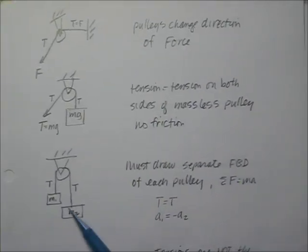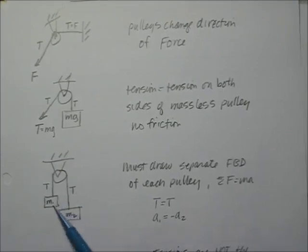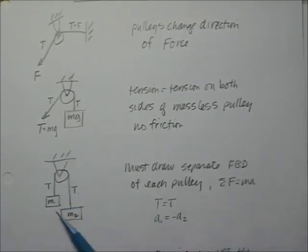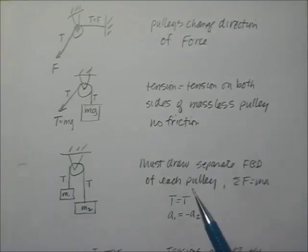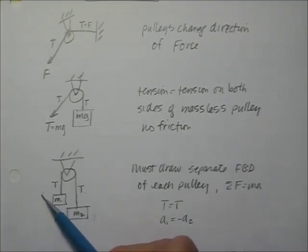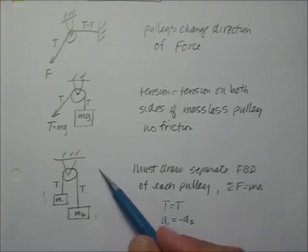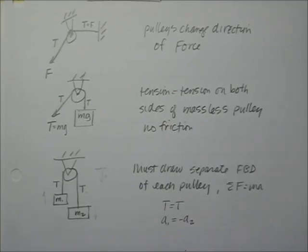Now, if you have two masses, the tension is still the same. However, in order to analyze this, you have to draw separate free body diagrams of the two masses. Just bear in mind that if one of them has an acceleration down, then the other one has an acceleration up. The tension is equal on both sides, but the acceleration of one is equal to the negative acceleration of the other.